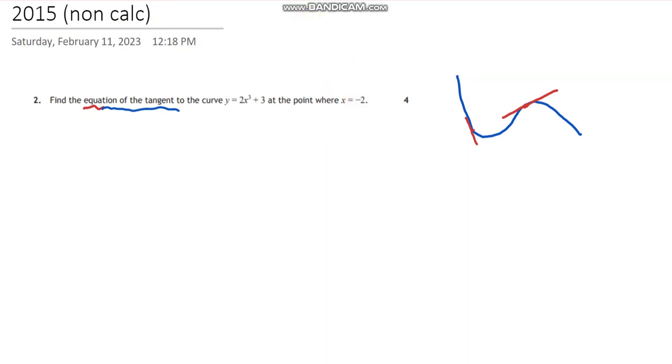The question is trying to get us to say, okay, well, to get my gradient, I'm going to have to differentiate. So, straight line as always, point gradient equation. My point is when x is negative 2, and I'll come back to the y, and the gradient.